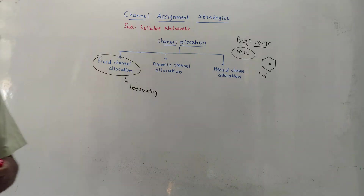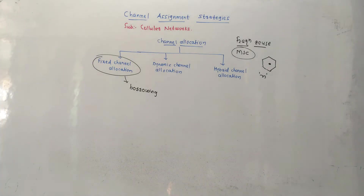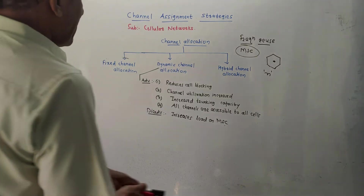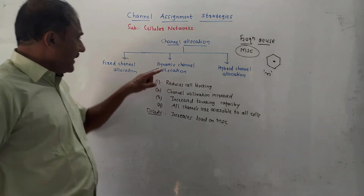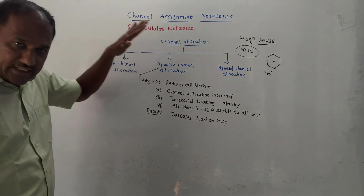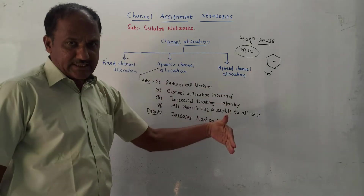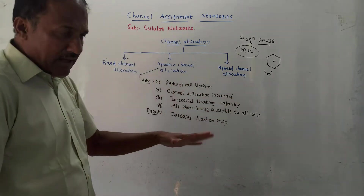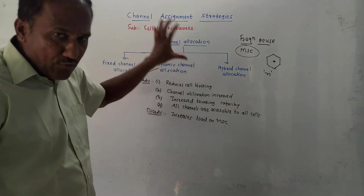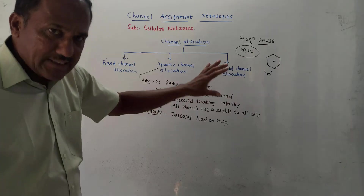The only advantage of fixed channel allocation is that you don't need to use cell splitting, which is a costly method. The second type is dynamic channel allocation. As the name indicates, it is a dynamic system — no fixed channels or frequency bands are allocated to each cell.